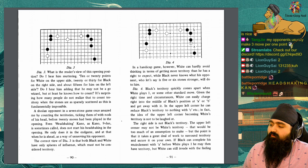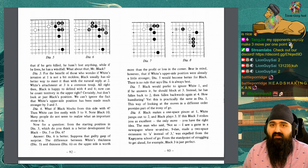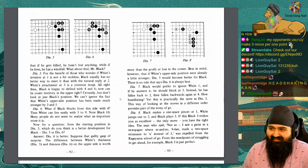If black can complete his encirclement with A before white plays 1, he may then have territory, but white can still invade with the feeling that if he gets killed, he hasn't lost anything, while if he lives, he has a windfall. What about that, Mr. Black?